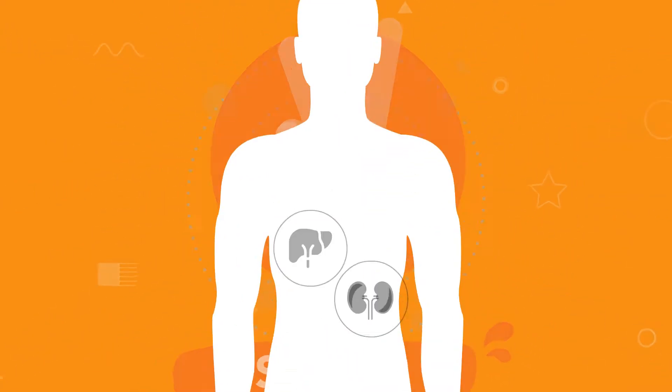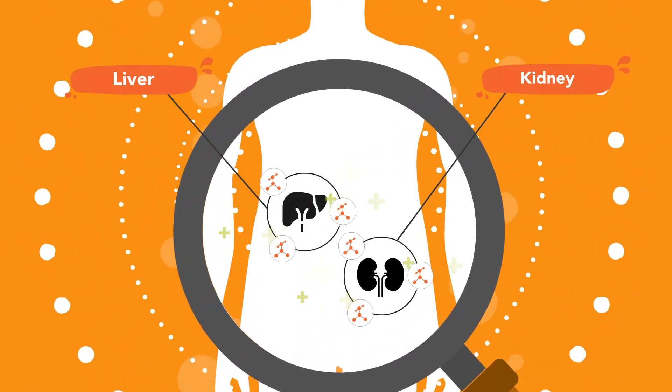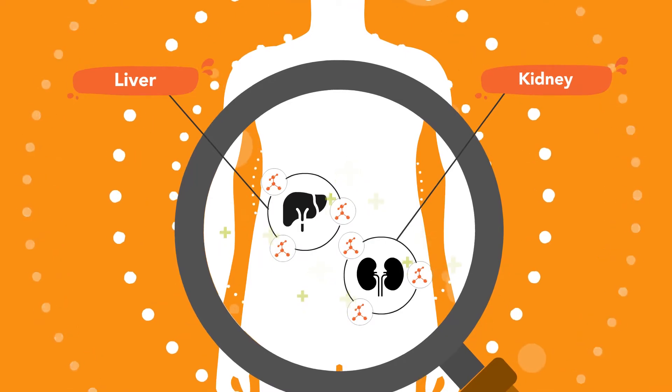Stage 3: Finally, the toxins are eliminated from the body via mainly the kidneys through urine and the liver through bile.